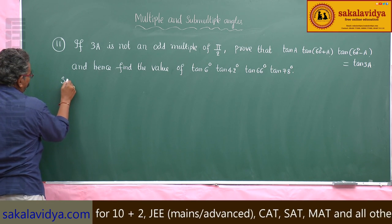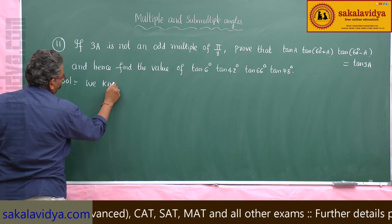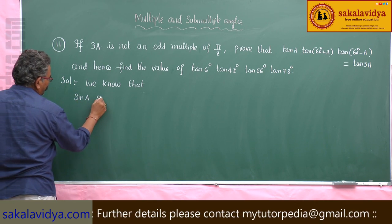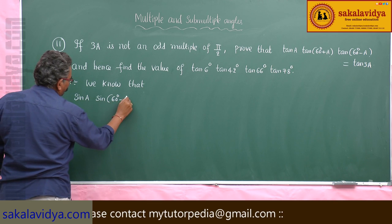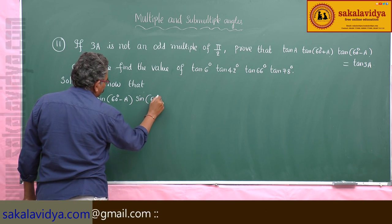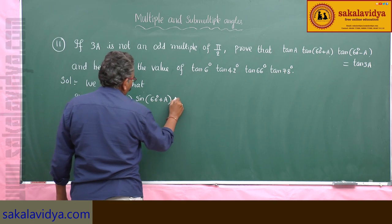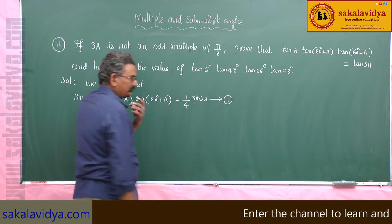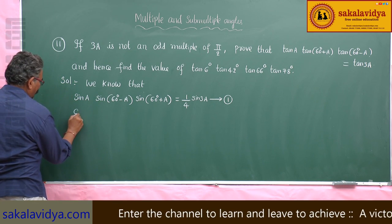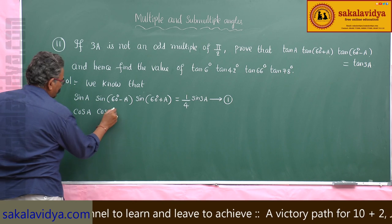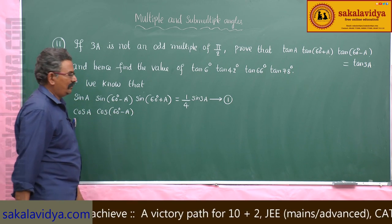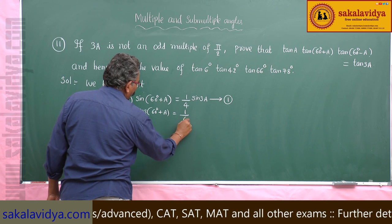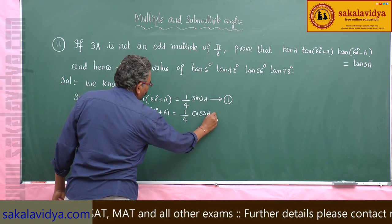First, we know that sin A · sin(60° - A) · sin(60° + A) = (1/4) sin 3A — say equation 1. And cos A · cos(60° - A) · cos(60° + A) = (1/4) cos 3A — say equation 2.